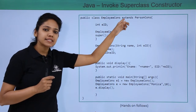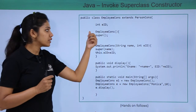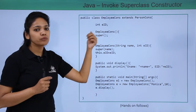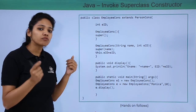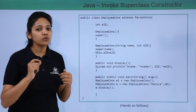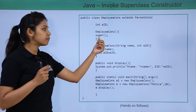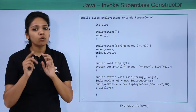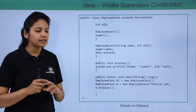In the empty constructor of EmployeeConstructor, we are trying to call the empty constructor of the parent class. To call an empty constructor from the parent class, we use the super keyword with open and close brackets and no parameters.